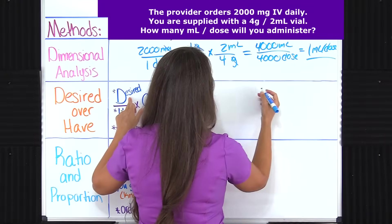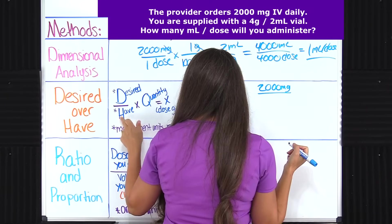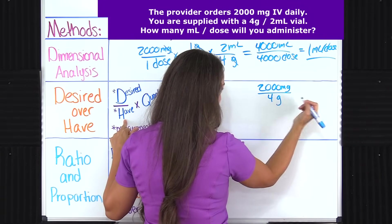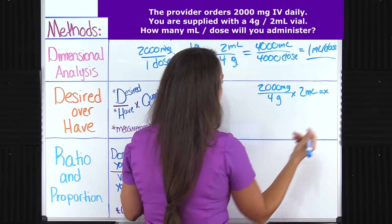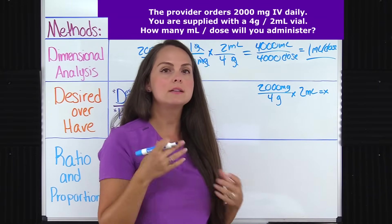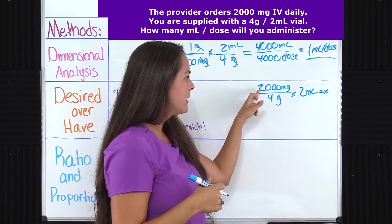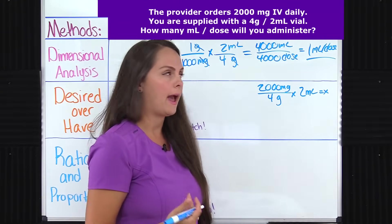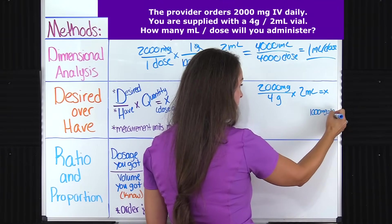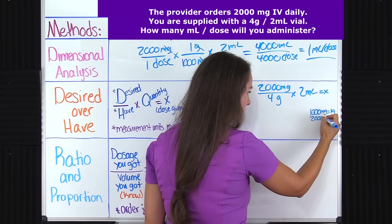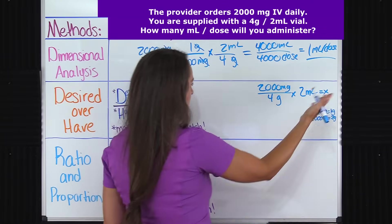Our desired dose is 2000 milligrams — that's what they desire for the patient to have. What dose do we have on hand? We have a four gram dose on hand. We're going to multiply that by the quantity, which in this case is volume: two milliliters equals X. Right off the bat, I see that these measurement units do not match, so that signals I've got to pull from the metric table and do a little converting. I want to convert the 2000 milligrams to grams so it matches the four grams. From the metric table, 1000 milligrams equals one gram, so 2000 milligrams equals two grams.